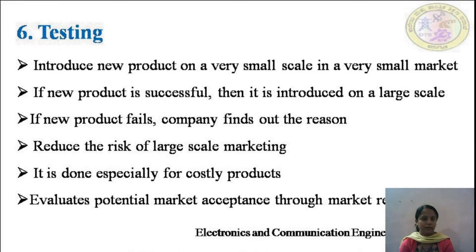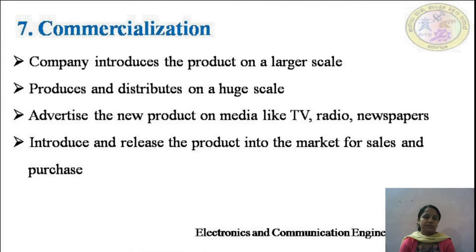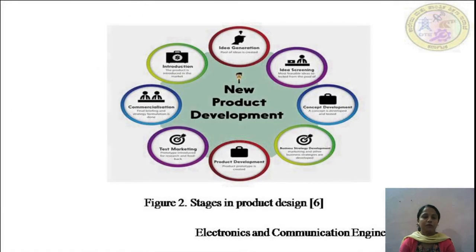Once the product is successful in the smaller market, it is produced in a larger scale and introduced to the market. This stage is called commercialization — producing and distributing on a huge scale. During commercialization, advertising the new product through media such as TV, radio, and newspapers is also done. These are the seven stages involved in the design of a product: idea generation, idea screening, concept development, business analysis, product development, test marketing, and commercialization.